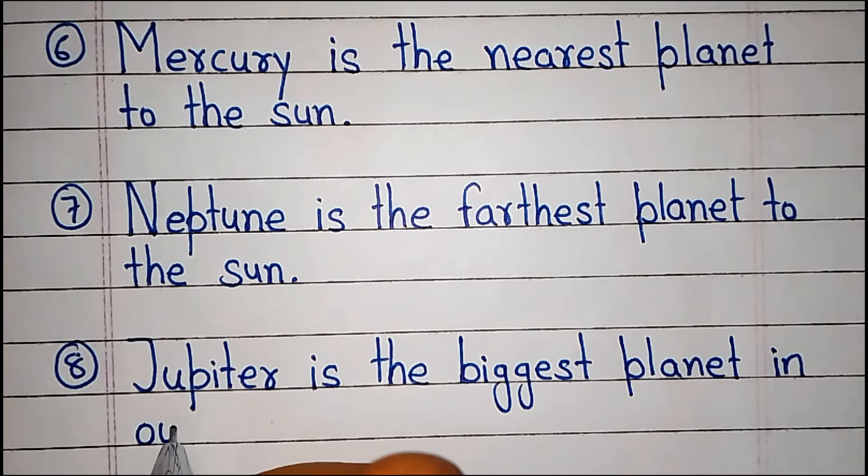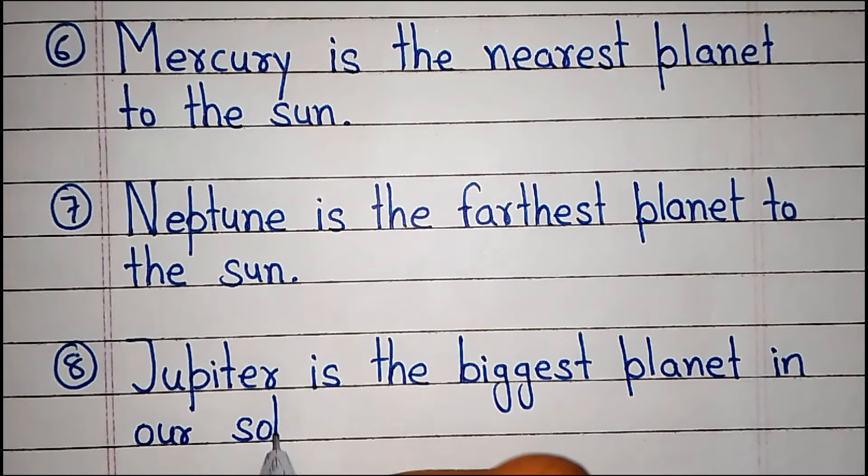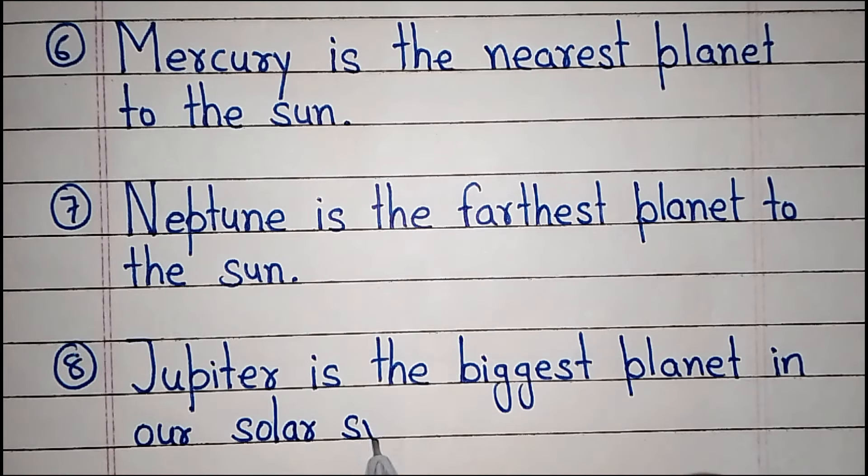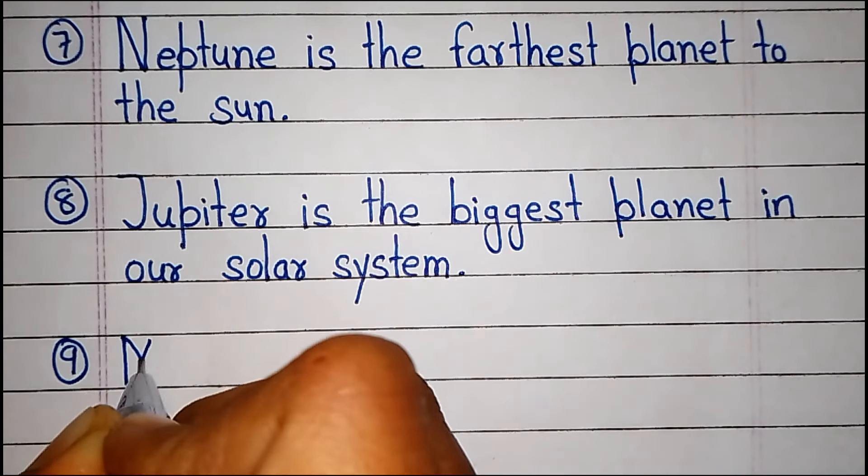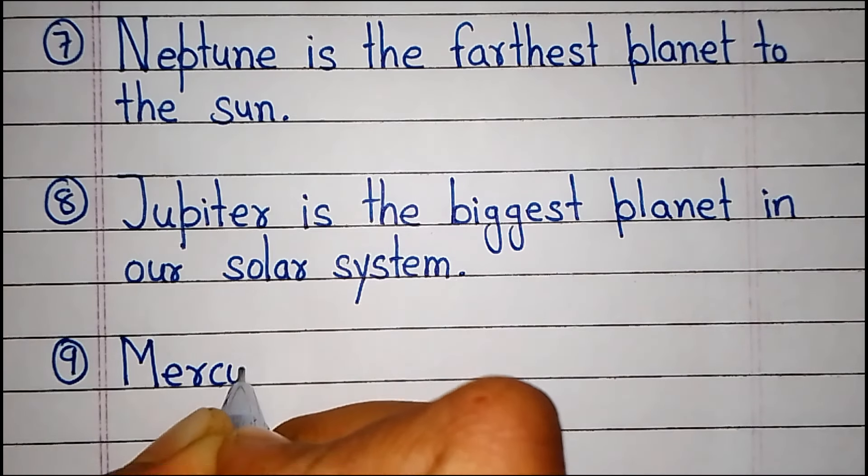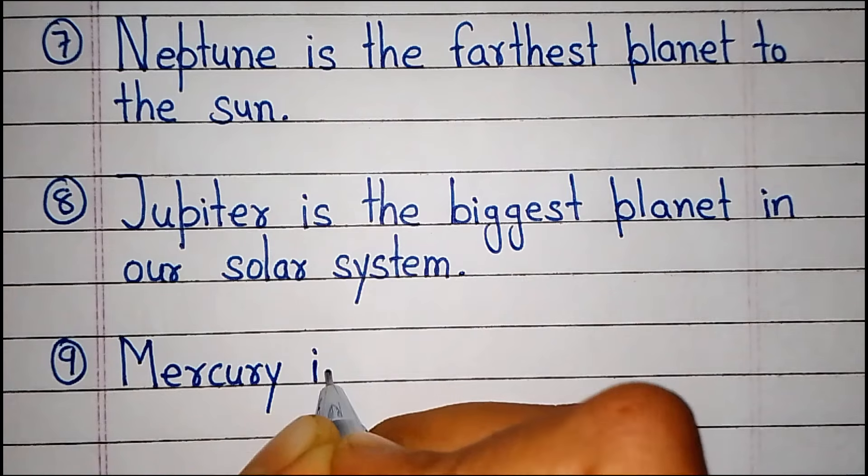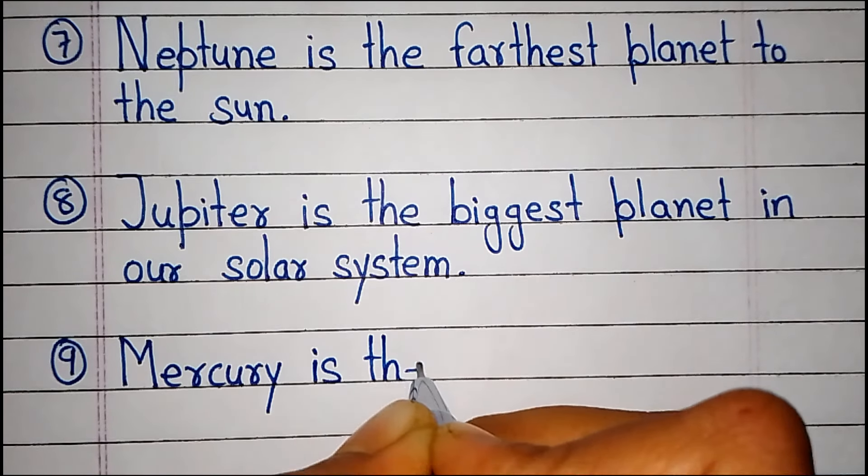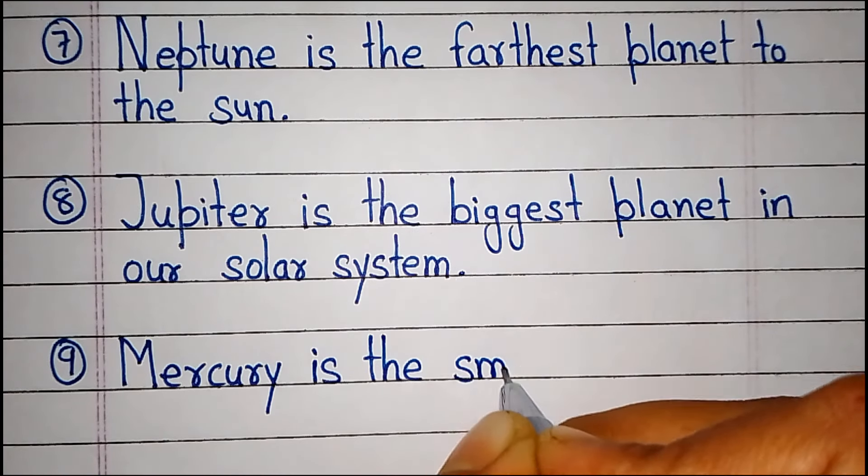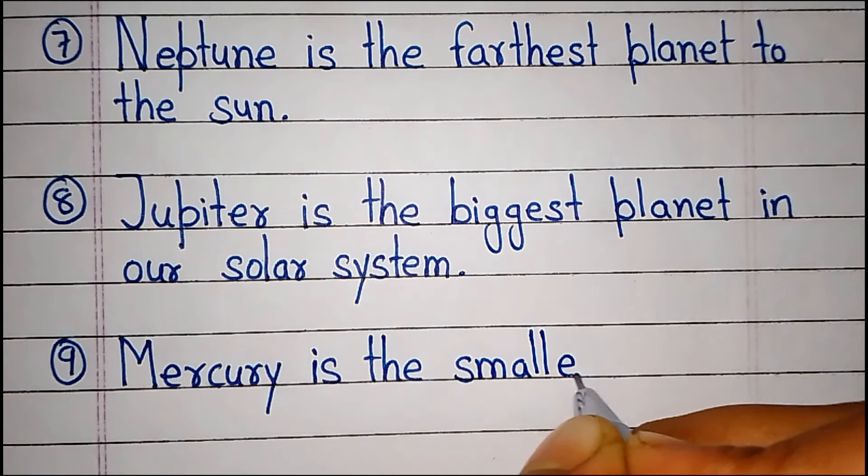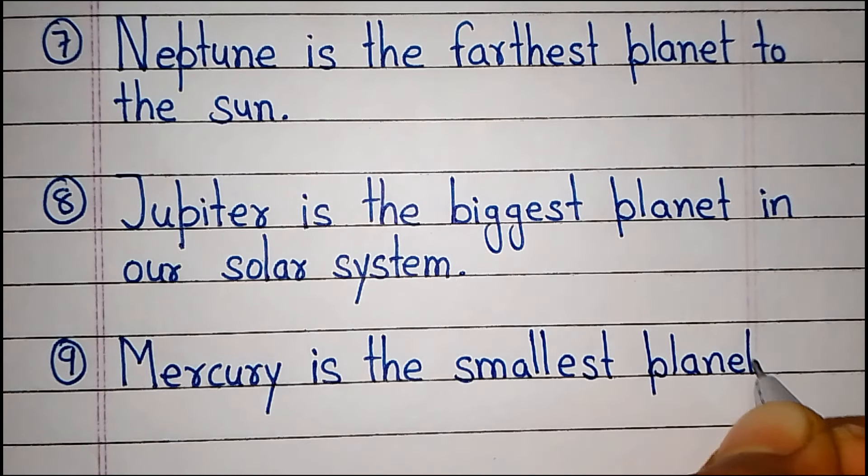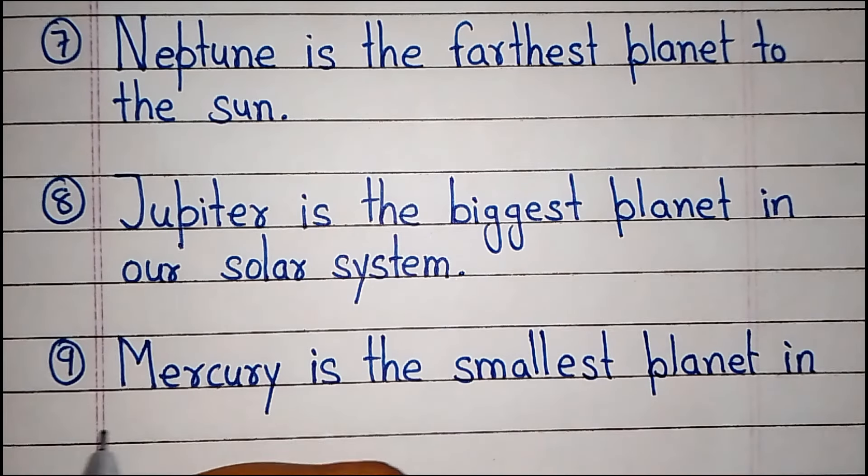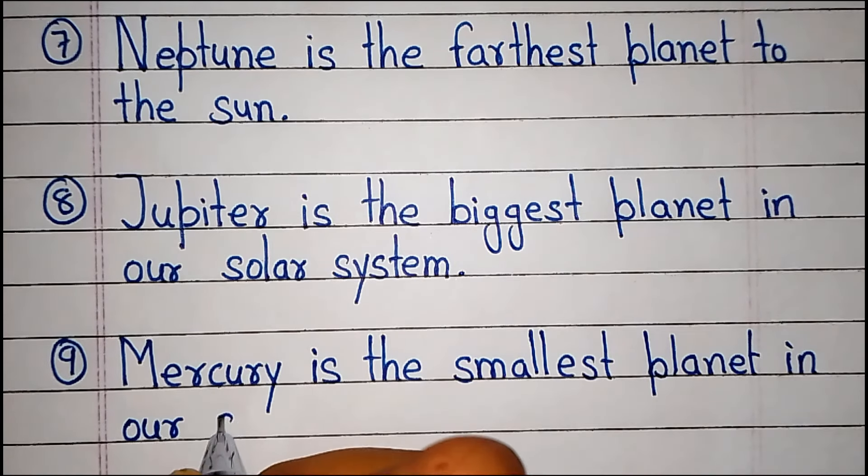Jupiter is the biggest planet in our solar system. Mercury is the smallest planet in our solar system.